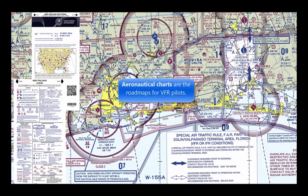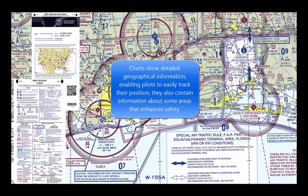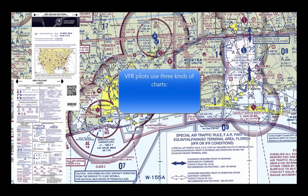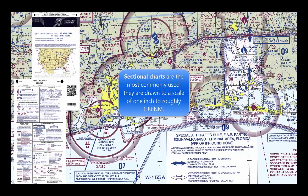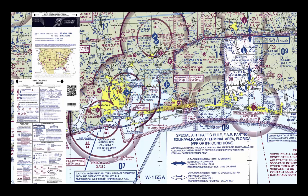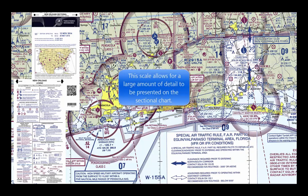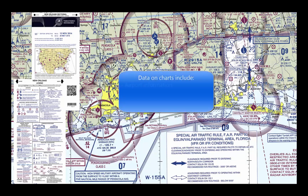An aeronautical chart is the roadmap for a pilot flying under VFR. The chart provides information which allows pilots to track their position and provides available information which enhances safety. The three aeronautical charts used by VFR pilots are sectional, VFR terminal area, and world aeronautical. Sectional charts are the most common charts used by pilots today. The charts have a scale of 1 to 500,000 — 1 inch equals 6.86 nautical miles (NM), or approximately 8 statute miles (SM) — which allows for more detailed information to be included on the chart. The charts provide an abundance of information, including airport data, navigational aids, airspace, and topography.